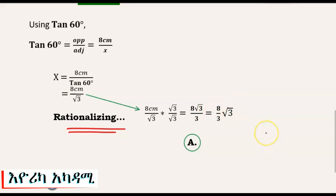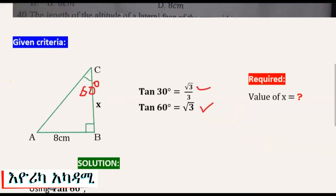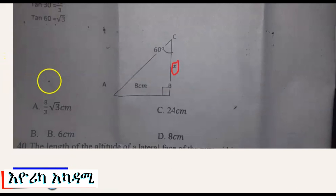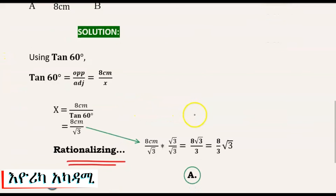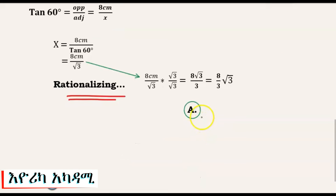So the value of x is 8 over 3 radical 3, which is the same as 8 radical 3 over 3. This is our final answer.